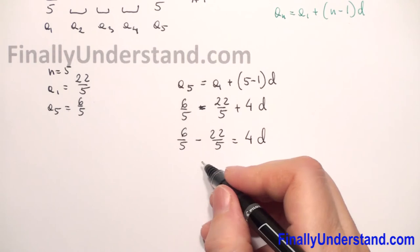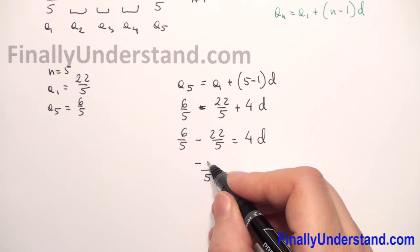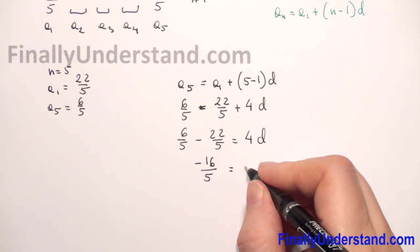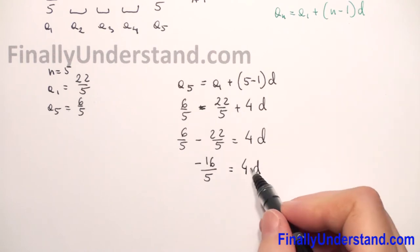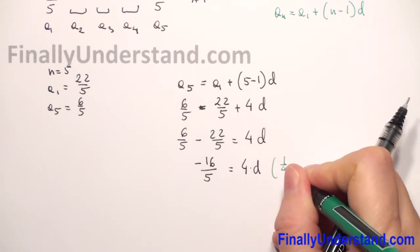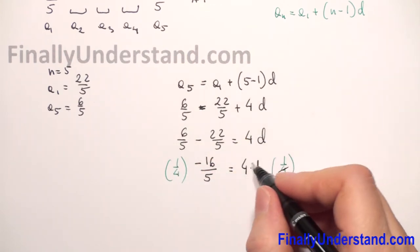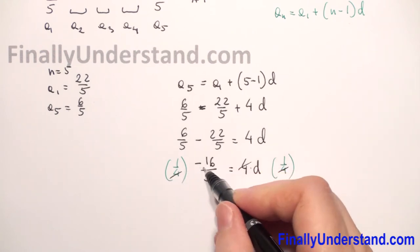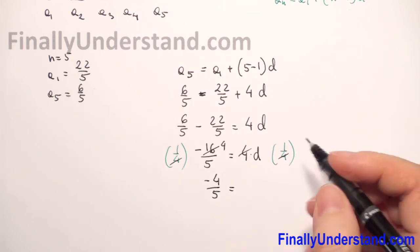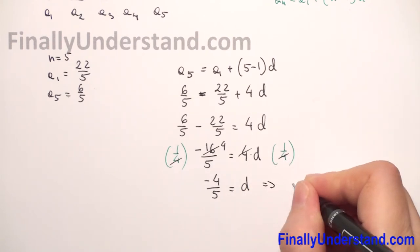We have negative 16 over 5 equals 4d. To isolate d, we multiply both sides by 1 over 4. The 4s cancel, and 4 divides into 16 to give 4, so we get d equals negative 4 over 5. We have calculated the common difference: d is negative 4 over 5.